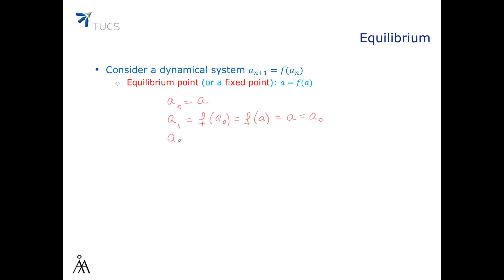The same is true also for A2. A2 is f(A1), and A1 we just saw is exactly equal to A. So the whole dynamical system is constant. In other words, if we start with the initial value A0 equals A, then An equals A for all n greater than or equal to 0.